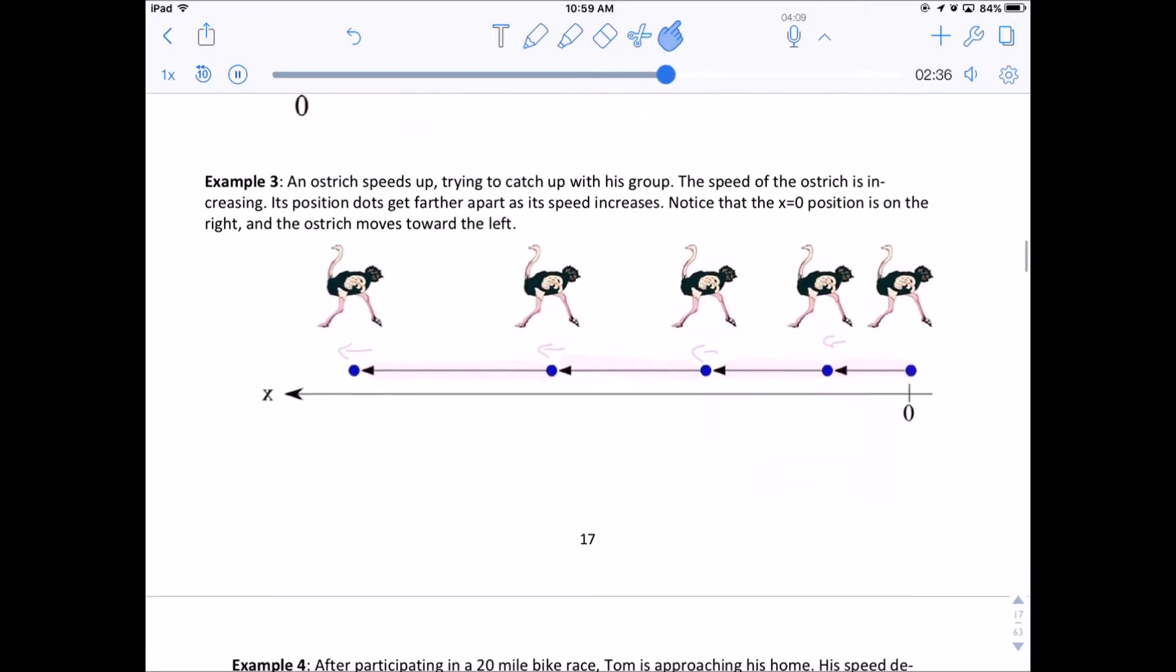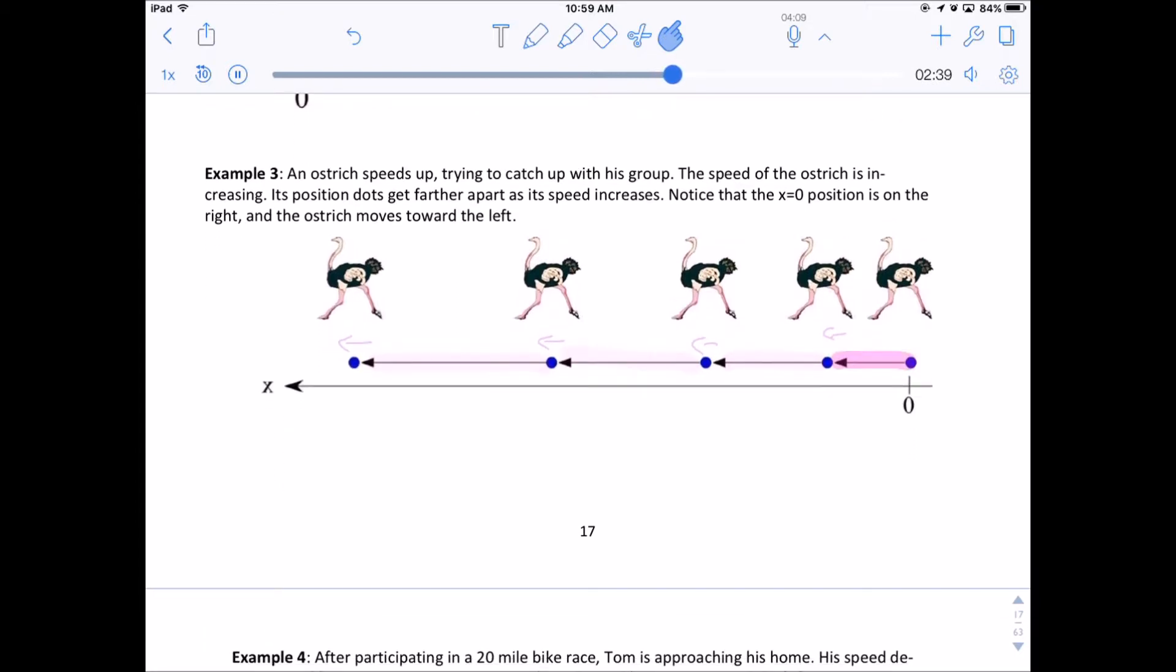Now here's an interesting one, we have an ostrich and it's running in the negative direction, but if you notice, since it starts over there, it's getting faster and faster. This is where the motion diagrams get a little bit more complicated. We're going to add a little bit each time this ostrich is going faster and faster, so that's what our acceleration looks like.